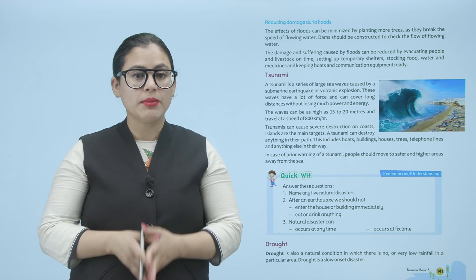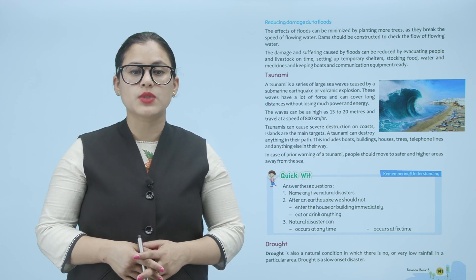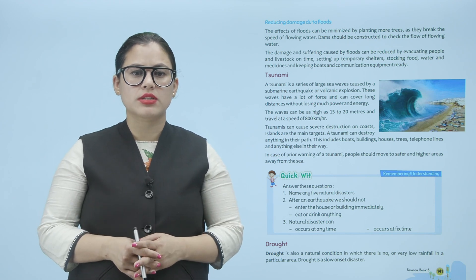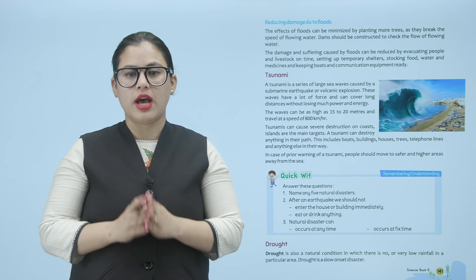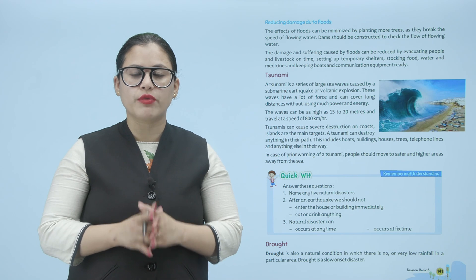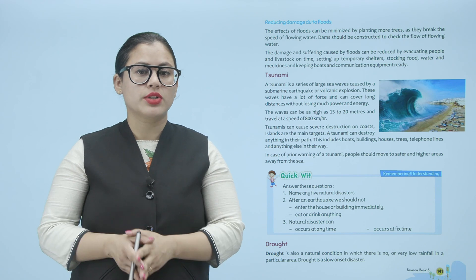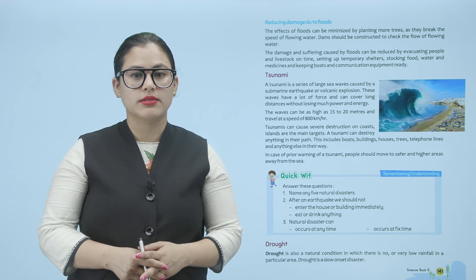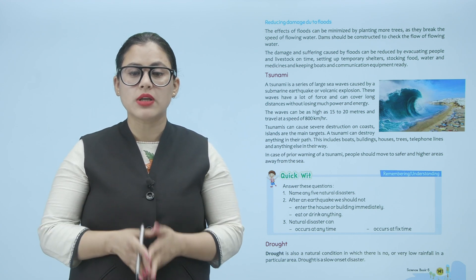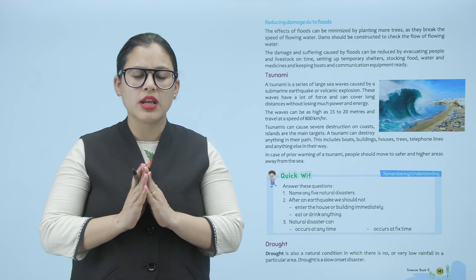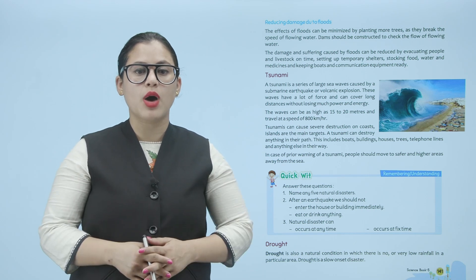Tsunami: a tsunami is a series of large sea waves caused by a submarine earthquake or volcanic explosion. These waves have a lot of force and can cover long distances without losing much power and energy. Waves can be as high as 15 to 20 meters and travel at a speed of 800 km per hour. Tsunamis can cause severe destruction on coasts and islands, which are the main targets. A tsunami can destroy anything in its path — boats, buildings, houses, trees, telephone lines and everything else. In case of prior warning of a tsunami, people should move to safer and higher areas away from the sea.